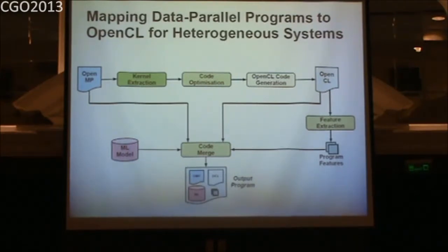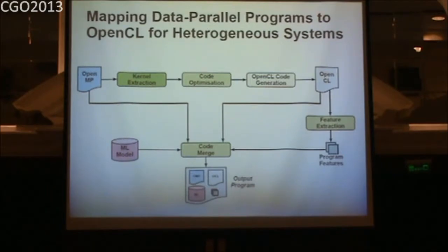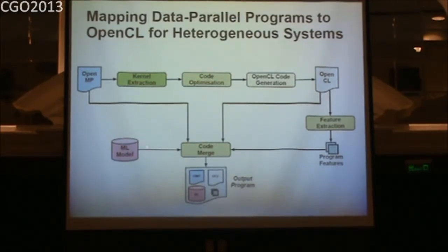A more detailed overview: we start with OpenMP and extract the kernel — straightforwardly, one OpenCL kernel per OpenMP loop, without merging loops. We perform optimizations like loop interchange to improve memory performance on the GPU, then generate OpenCL code. On that code we do feature extraction. Rather than making a decision at compile time, we package the OpenMP, OpenCL, and program features together in one output program, along with a machine learning model that makes the prediction at runtime.